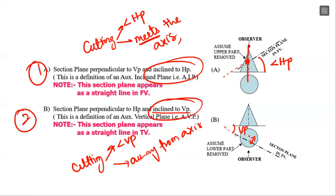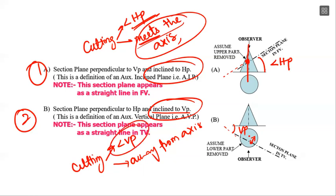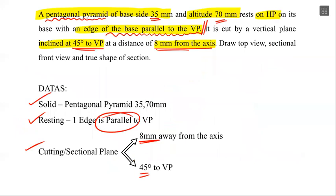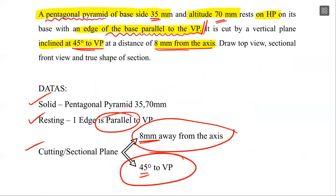In the first case, the cutting plane is inclined to VP and meets the axis. In the second case, the cutting plane is inclined to VP and is away from the axis by a distance. The cutting plane here is 45 degrees to VP, and away from the axis by 8mm.